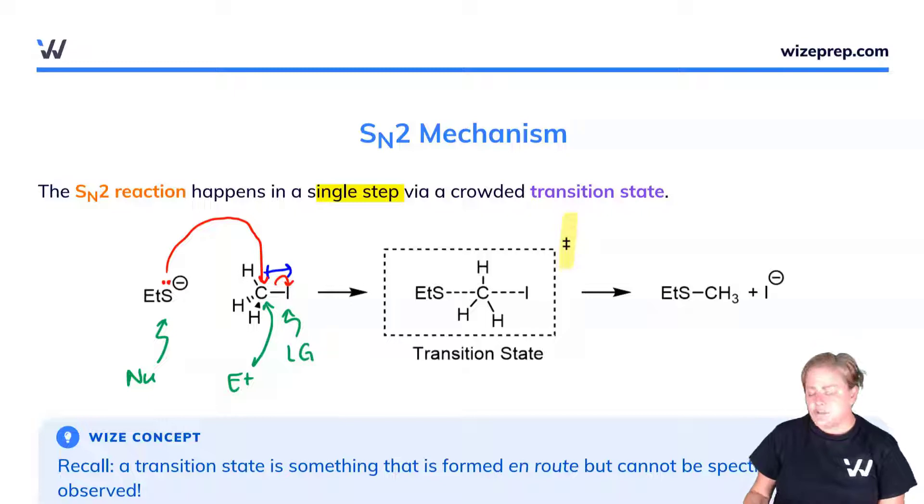Now I want to draw your attention to something, and that's these dotted lines here. What these dotted lines mean is we have partially formed bonds. In this transition state, we've partially formed the new bond between the sulfur and the carbon and partially broken the old bond between the carbon and the iodine.